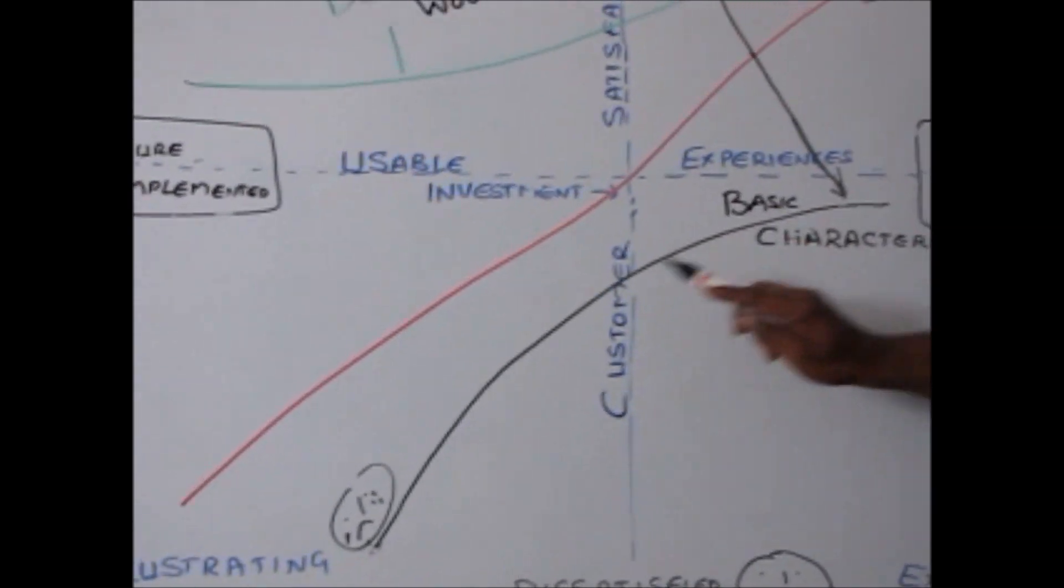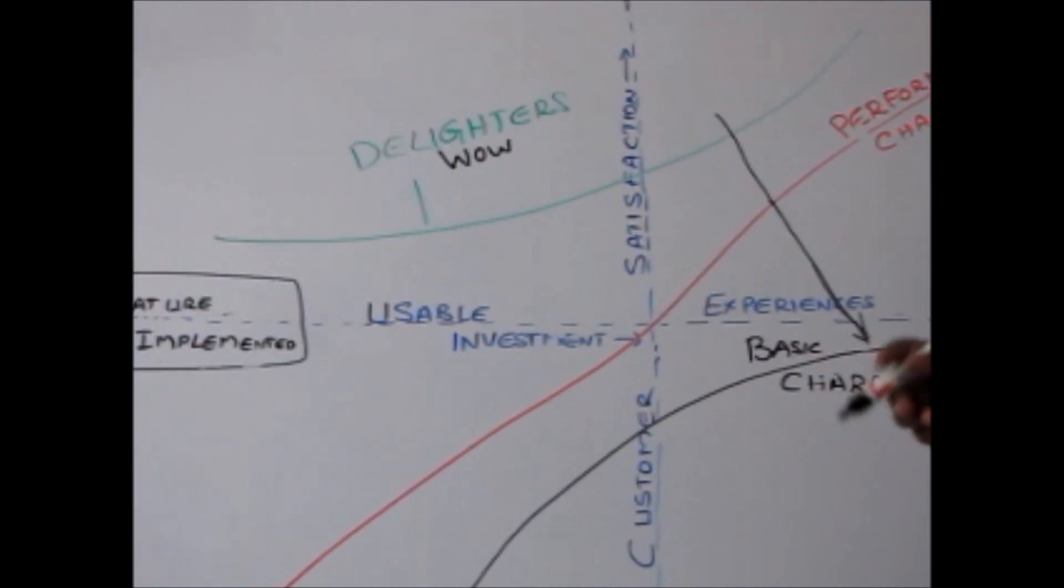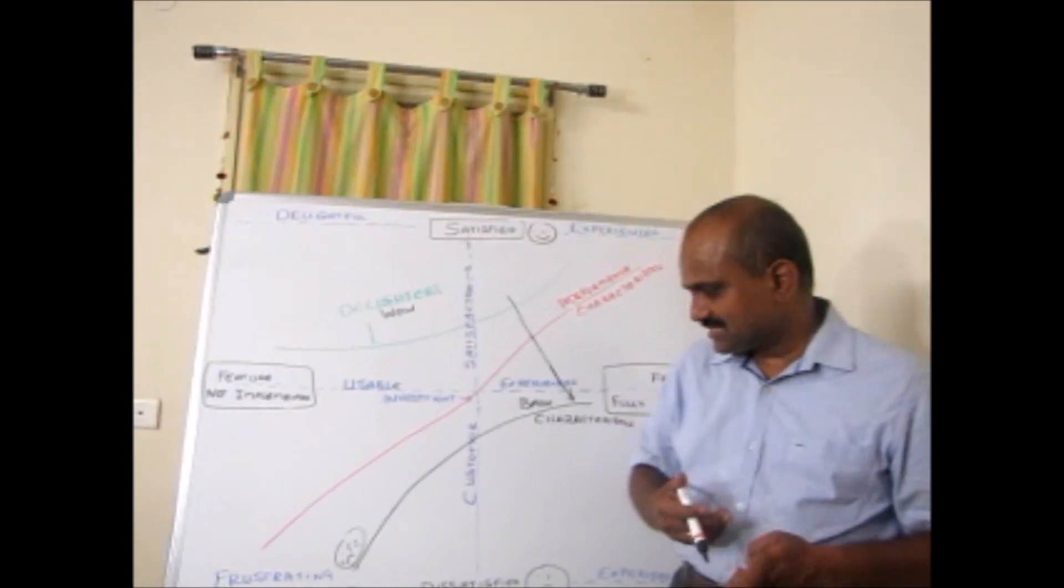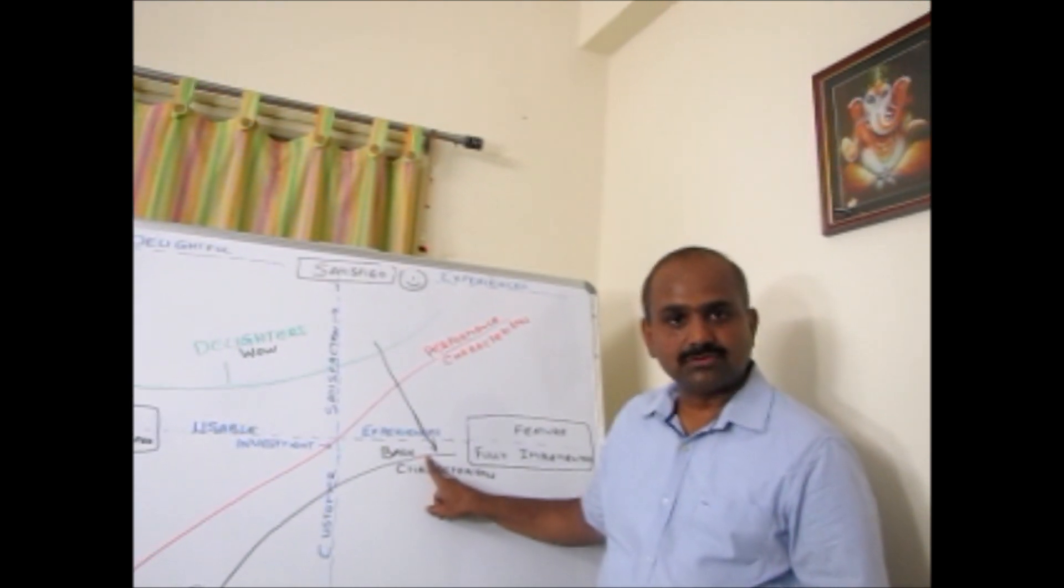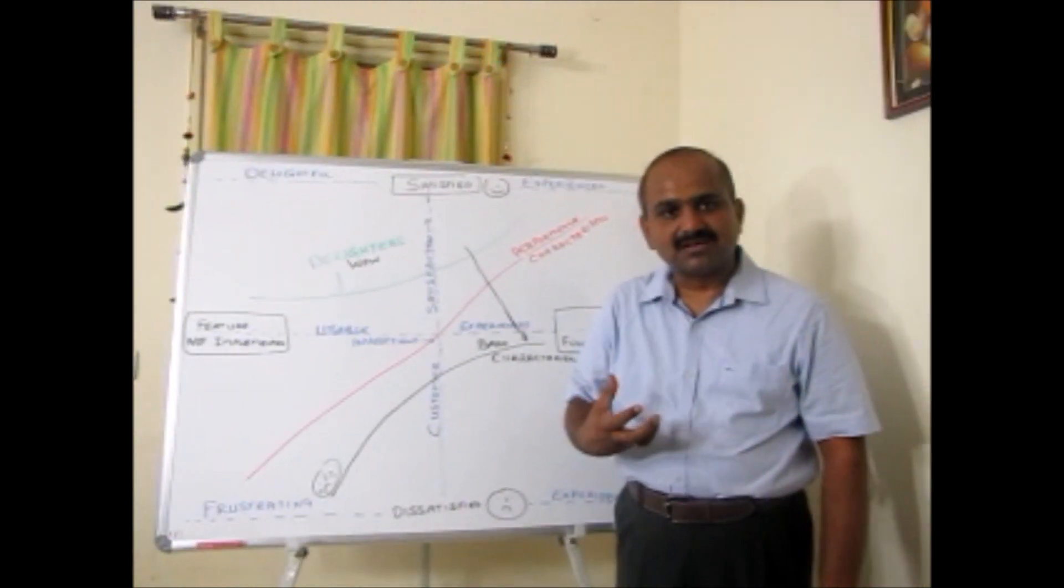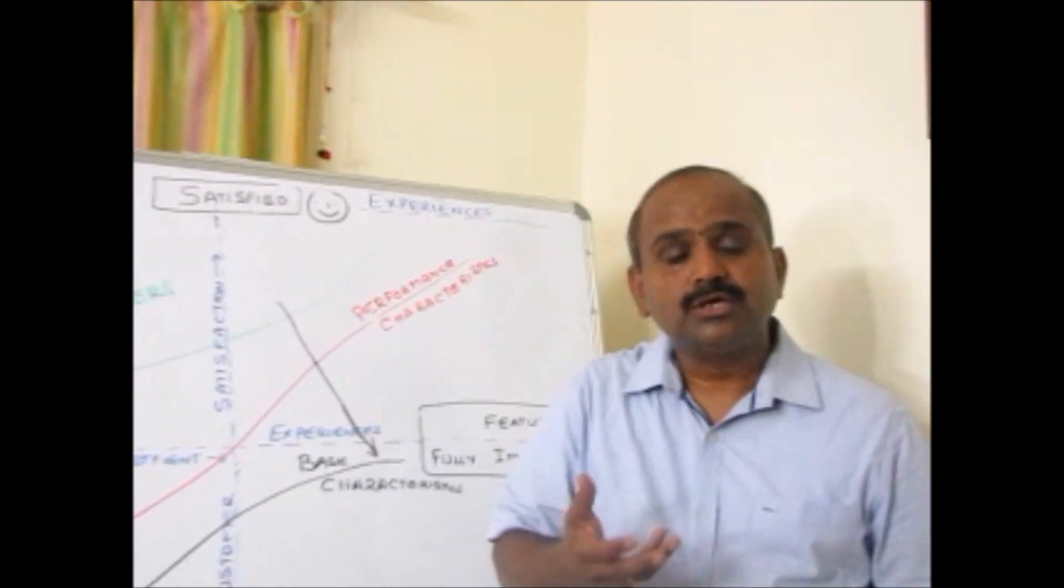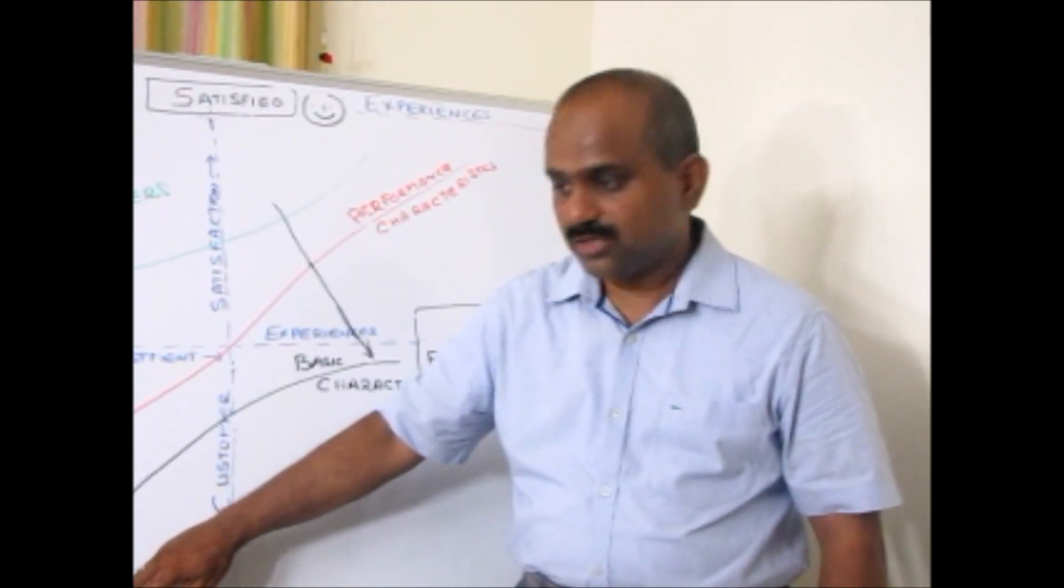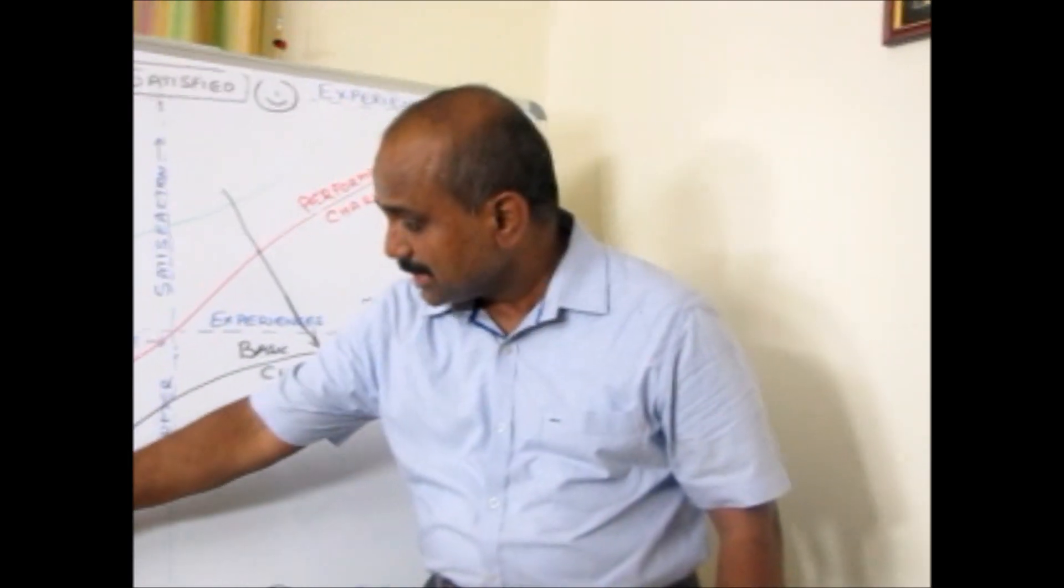This model has three patterns. One is basic pattern, performance characteristics, and delighters characteristics. This can be applied not only to product design, it can be applied even to a job also. For example, you want to do more of a basic characteristics so that your boss is not unhappy with you. You don't attend the meetings on time, you don't contribute to the meetings. You are a senior person, you are supposed to contribute at a certain level. Contributing at that certain level, boss may not mention to you. But you have to do those things. If you don't do those things, your boss may feel unhappy.